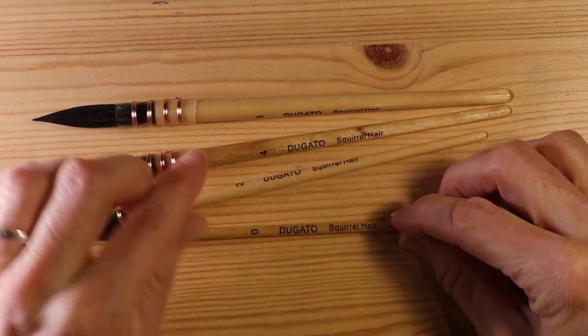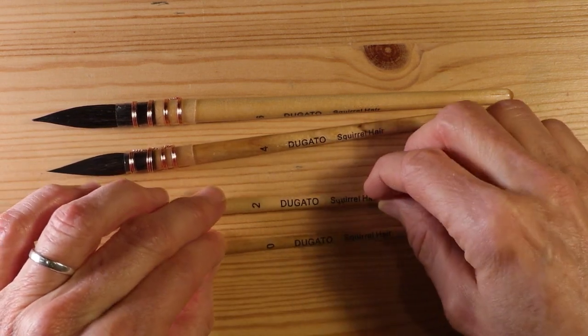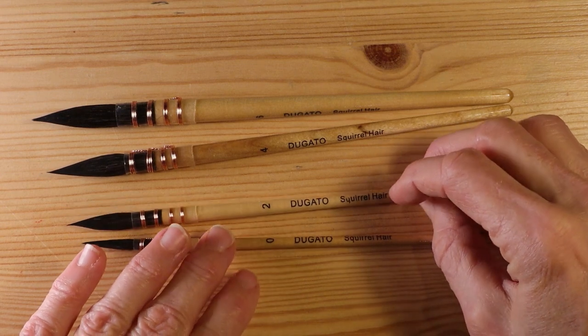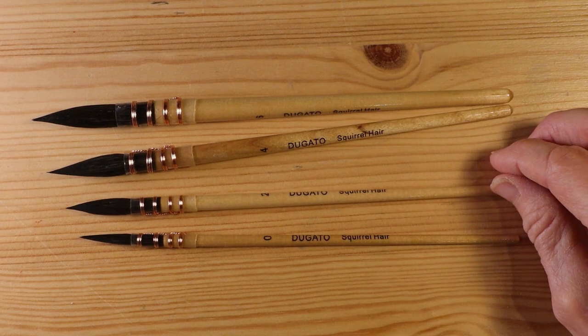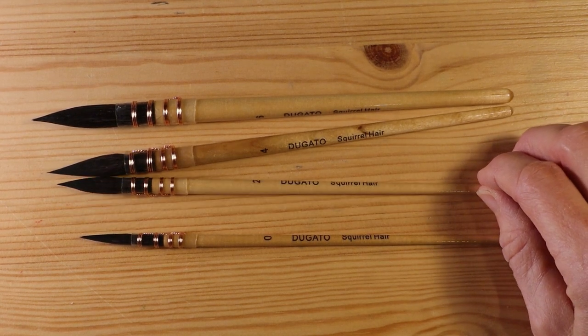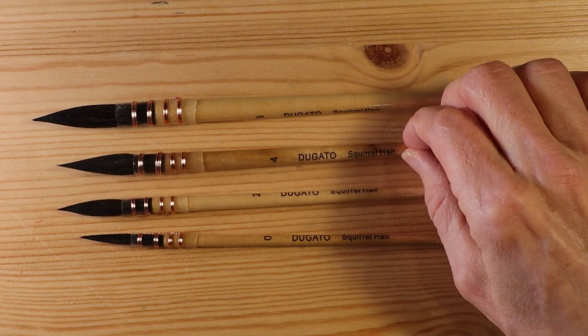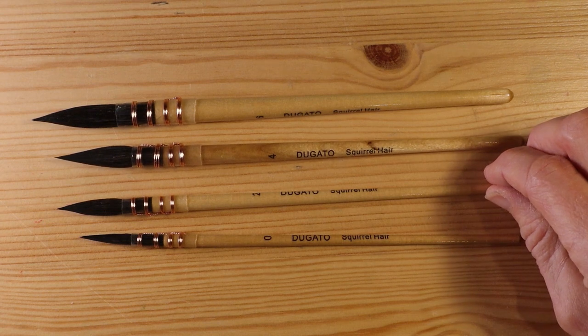So that's the entire set. I was able to purchase them via Amazon for about $37. So that is less than $10 per brush, which I think is an exceptional value for squirrel hair, natural hair brushes, especially because of just the quality of using squirrel hair. So I haven't used them yet, obviously just opened them.